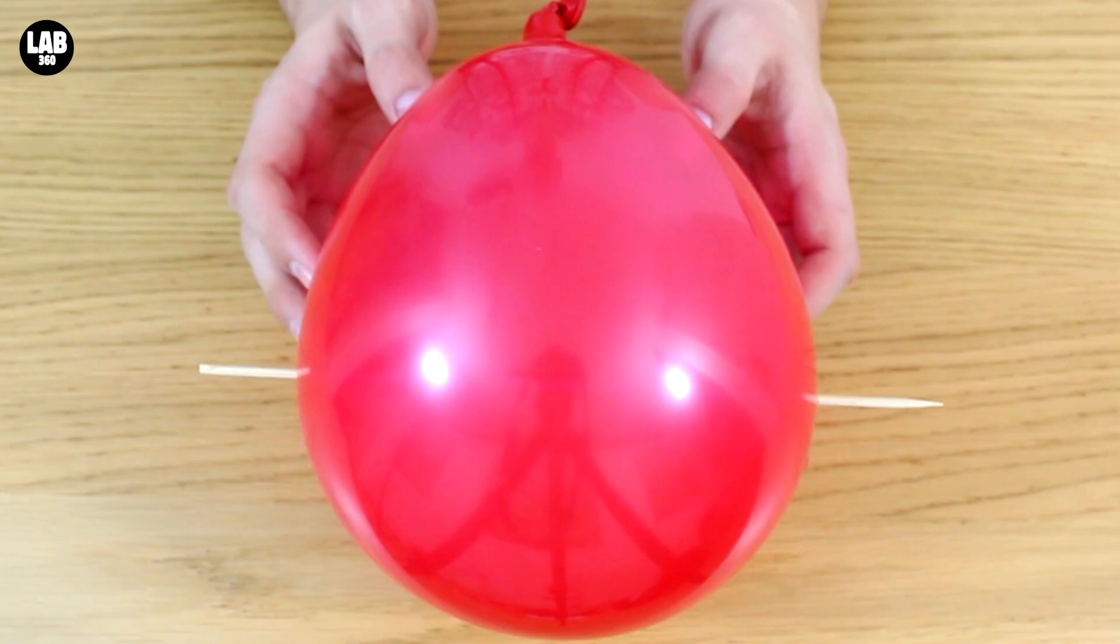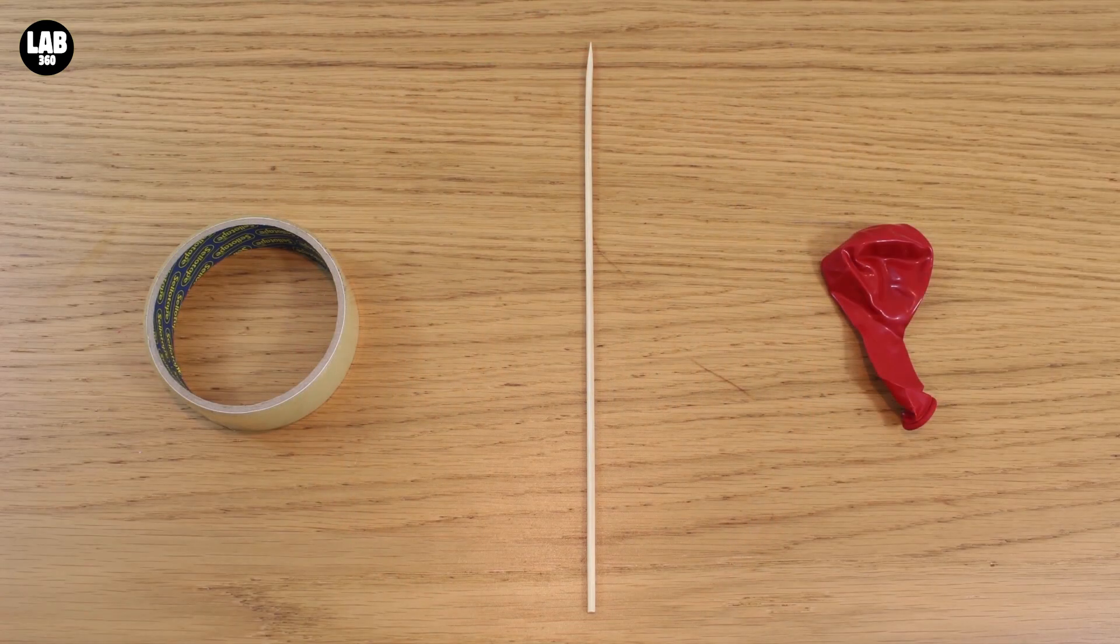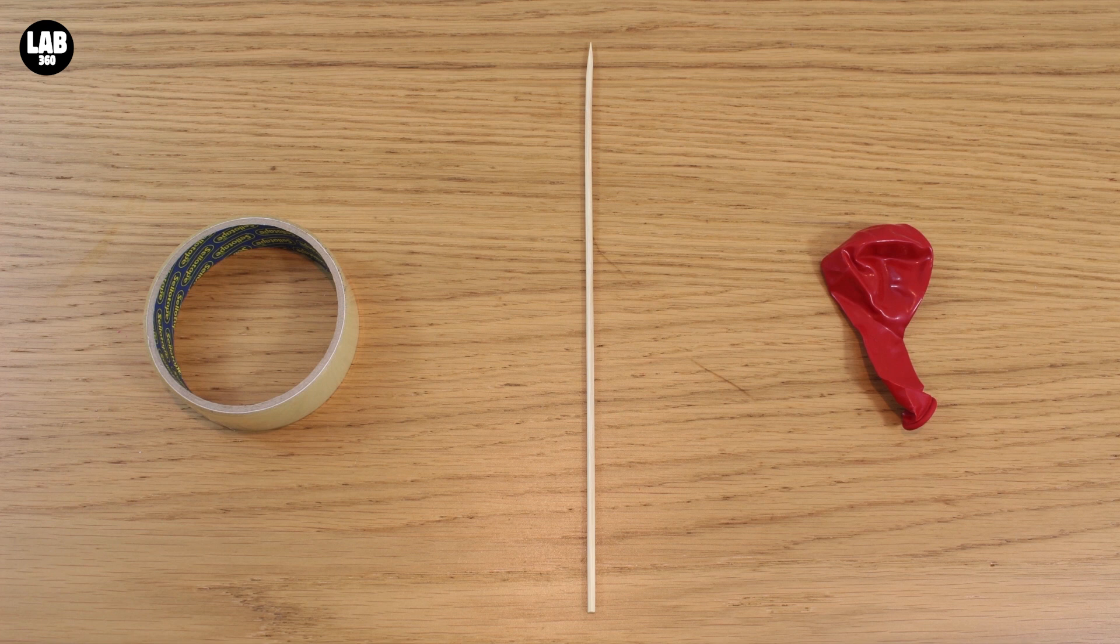Today, we're going to show you a non-popping balloon. This is a really fun experiment that you might have seen before. All you're going to need is a roll of sellotape, a skewer, and a balloon.